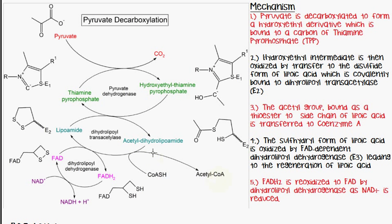The rest of the mechanism involves the sulfhydryl form of lipoic acid being oxidized by the FAD-dependent dihydrolipoyl dehydrogenase, which regenerates the lipoic acid. The FADH2 produced is then reoxidized to FAD by dihydrolipoyl dehydrogenase, and as this occurs, NAD+ is reduced to NADH.